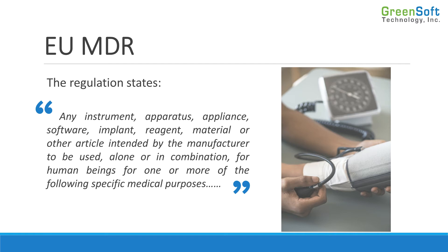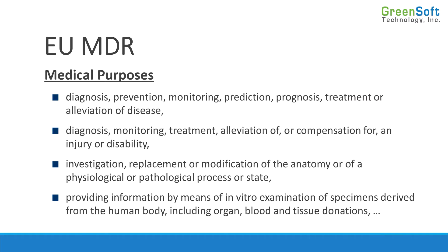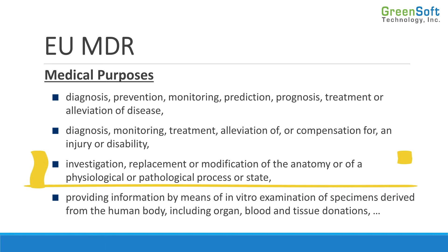Notice it says for human beings, not for animals. So veterinarian equipment is not a medical device. Now going through this list, it's pretty simple when it talks about diagnosing or treating a disease or disability. When it talks about investigation, replacement, or modification of the anatomy or of a physiological or pathological process or state, what it's saying is that if we have some device that messes with our heart rate — like a pacemaker — that changes the pathological or physiological process or state. So even though it may not treat a disease or an injury, if we have something that's messing with how our body works, that's a medical device. The same goes for any kind of limb replacement — that would also be considered a medical device.